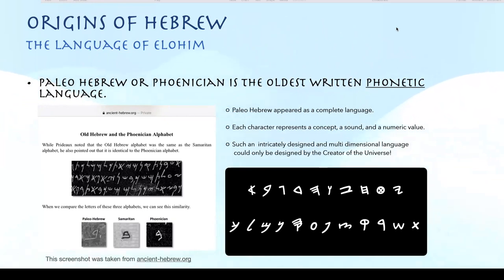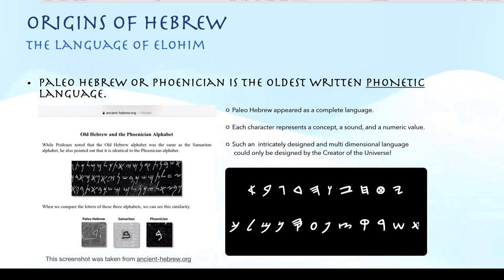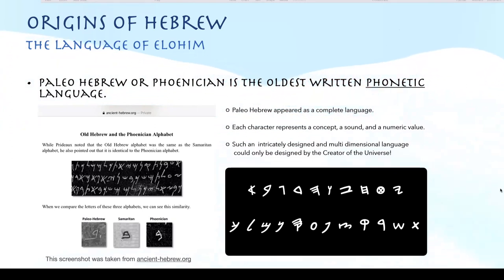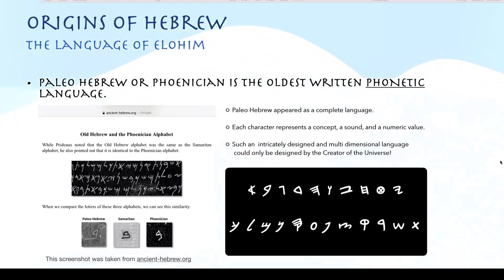Each character represents a concept, a sound, and a numeric value. I put the Paleo Hebrew alphabet down there, but my formatting keeps flipping it around — I've got the font but I still need to figure out why it's going left to right instead of right to left. You get the idea from these Paleo Hebrew characters. I want to credit ancienthebrew.org — that's a great resource for studying Paleo Hebrew.